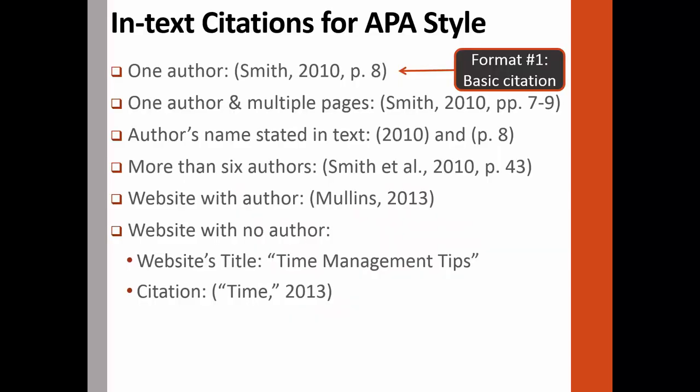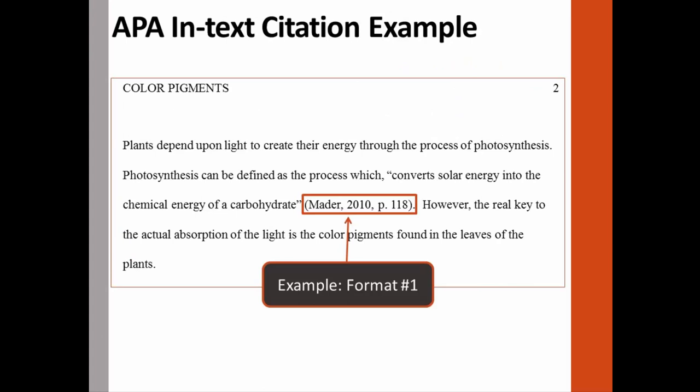The basic in-text citation for APA is a source with one author. When citing a source with one author, include the author's last name, the year of publication, and the page or paragraph number within parentheses, and separate this information with a comma. In addition, the in-text citation should be placed at the end of the sentence before the period, so your reader knows which information the parenthetical citation is connected to. This parenthetical citation includes the necessary information — the author's last name, the year of publication, and the page number of the text — and its placement directly after the quotation and before the period illustrates that the citation is connected to the previous quotation.